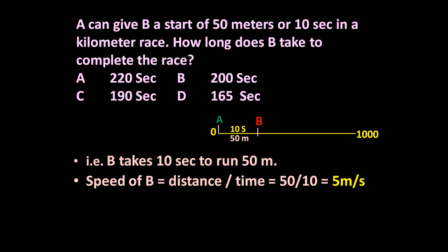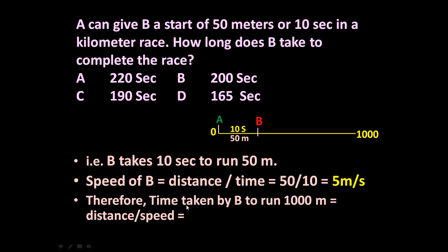Now, time taken by B to complete the race or to run 1000 meters will be given by distance upon speed. Here, total distance from 0 to 1000 is 1000 meters, and speed of B is 5 meters per second. Distance upon speed equals 200 seconds.